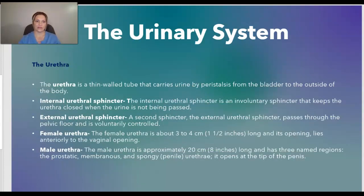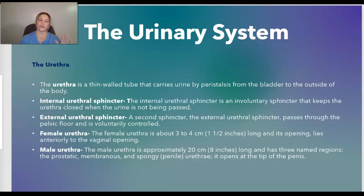The urethra is a thin-walled tube that carries urine by peristalsis from the bladder to the outside of the body. The internal urethral sphincter is an involuntary sphincter that keeps the urethra closed when urine is not being passed. The external urethral sphincter passes through the pelvic floor and is the sphincter that is voluntarily controlled — this is the sphincter that allows you to hold your urine when you have to go to the bathroom.